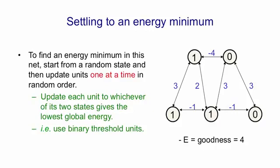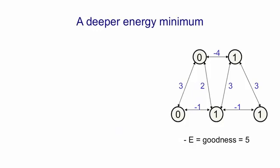We now have a global energy of minus four or goodness of four and that's a local energy minimum. If you now try probing any of the units you'll see that they don't want to change their current state. The net has settled to a minimum. However, the minimum it's settled to is not the deepest energy minimum. It's just one of two minima that this net has. The deepest energy minimum is shown on the right here and it's when the other triangle of units that support each other is on. That has a goodness of three plus three plus minus one is five so that's a slightly better energy minimum.